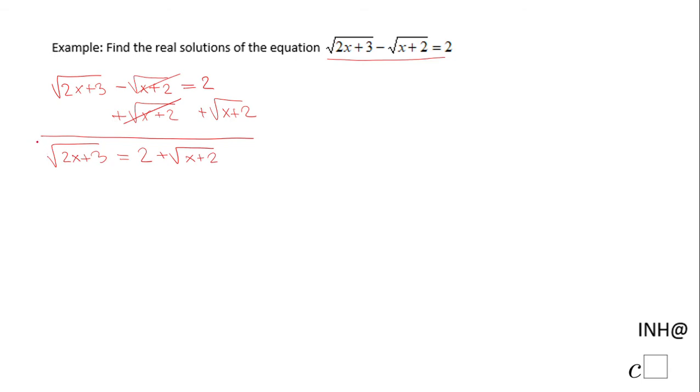I'm going to do that by raising to the second power. Then we have 2x plus 3 because the square root and the power of 2 cancel out.